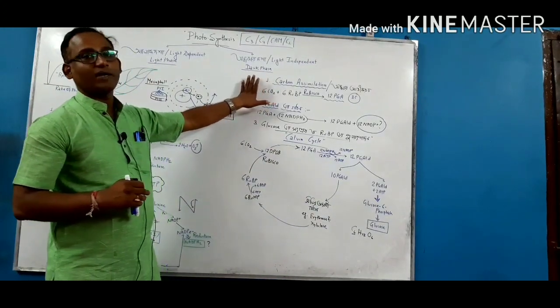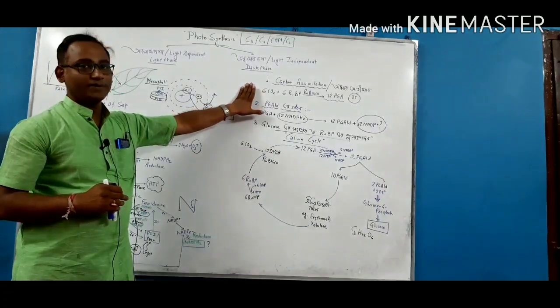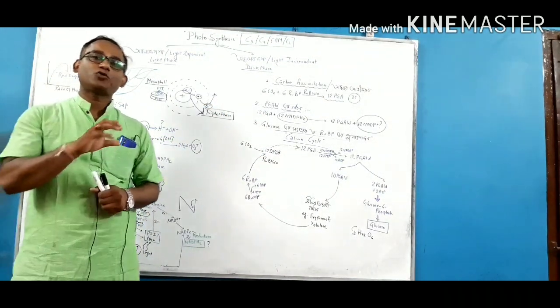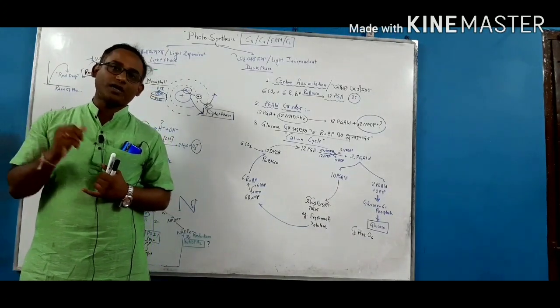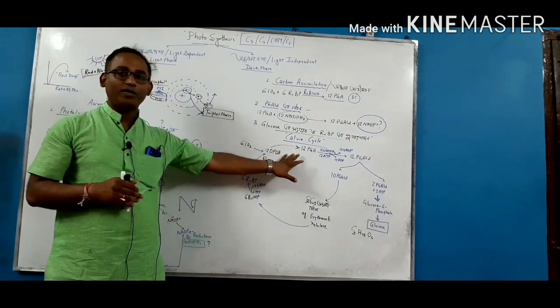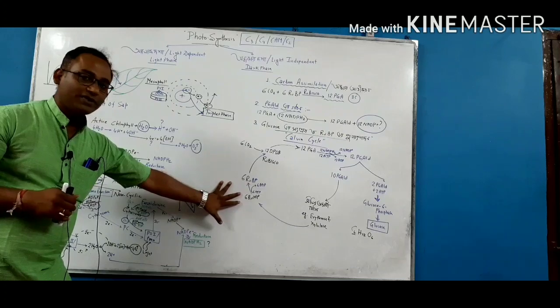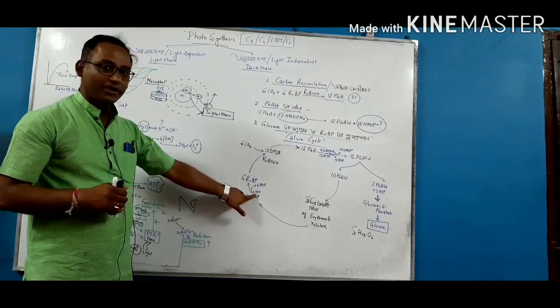Now, what do we call the NADPH2? I'll say that I'm calling Blackman reaction. We learned that I'm talking about the light reaction. I have three types, one is Benson, one is Ruben, one is Calvin.